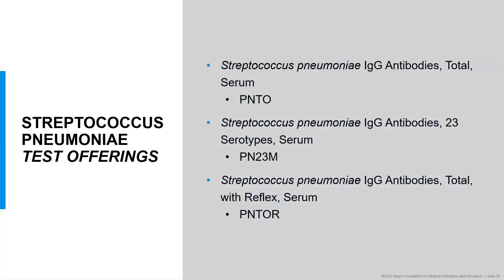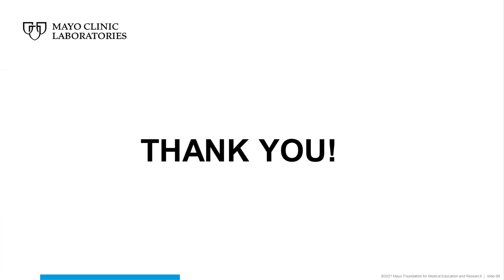Mayo Clinic Laboratories offers a group of tests useful for assessing antibody responses to pneumococcal vaccination. The Streptococcus pneumonia IgG antibodies total serum provides a global measurement of the antibody response, while the 23 serotypes serum gives a more detailed serotype specific assessment. The Streptococcus pneumonia IgG antibodies total with reflex serum incorporates both of the previous tests using a reflex approach. Thank you for joining me for this presentation on Streptococcal Pneumonia Antibody Testing. I hope you find it useful in your daily routine practice.